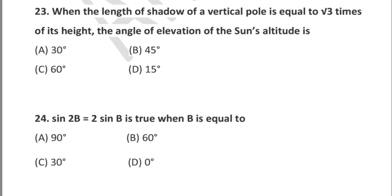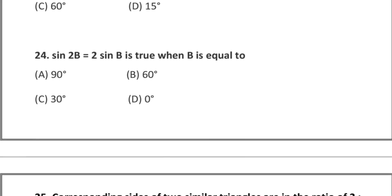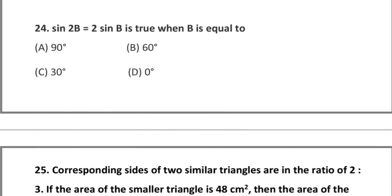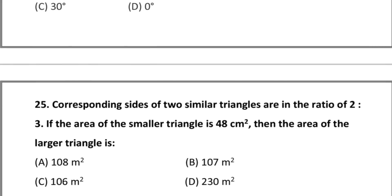Question 24: sin 2B = 2 sin B is true when B equals — option A: 90°, option B: 60°, option C: 30°, option D: 0°.